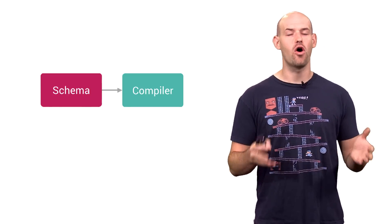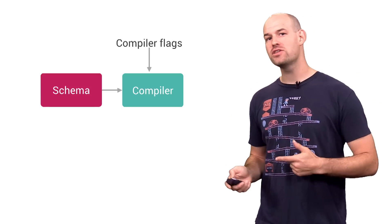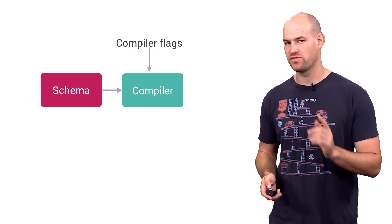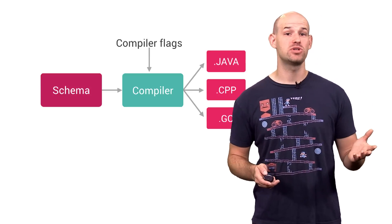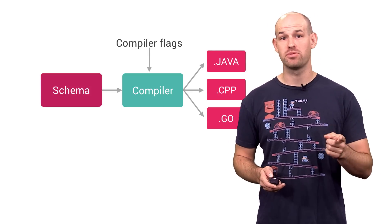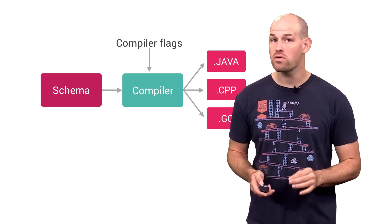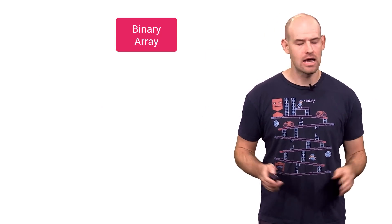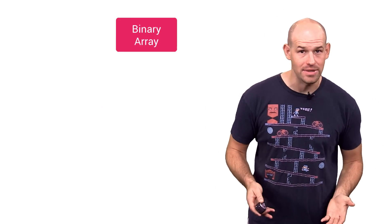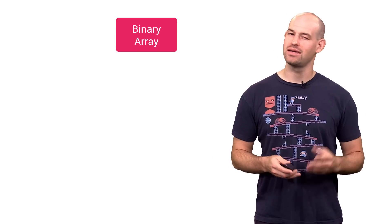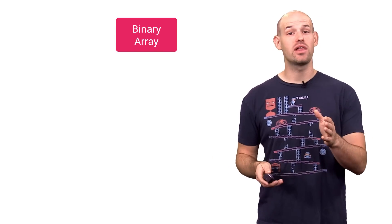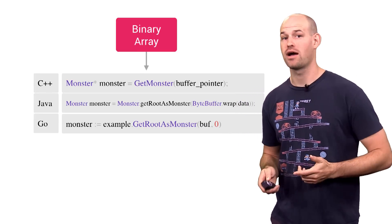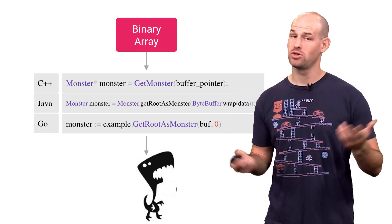Once you've created your schema files for all your serializable data, you feed those schema files into the FlatC compiler to generate source code files for your game. With the right command line switches, you can generate C++, Java, or even Go code files that you can drop right into your repo and compile. Regardless of what language you're actually programming in, using Flatbuffers to load data is pretty simplistic. Given your serialized stream of bytes, pass it off to a single line of code to convert it into your desired object, and then you're ready to start using it.